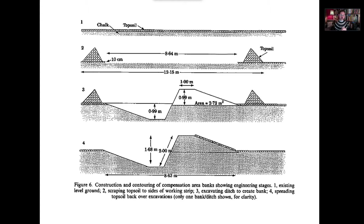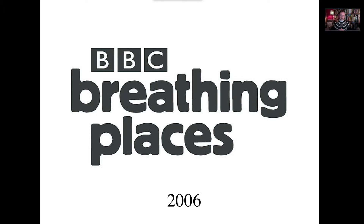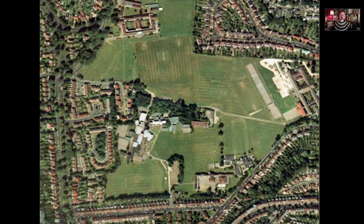They removed the topsoil, dug down about a meter, took that spoil and put it on top to create a slope about two meters deep. I knew I wouldn't be able to do that during my PhD — the university bureaucrats wouldn't allow me to dig up the campus — so I waited to become a school teacher. When we went for a BBC Breathing Places lottery-funded award of £10,000, the headmaster was more than happy to agree.